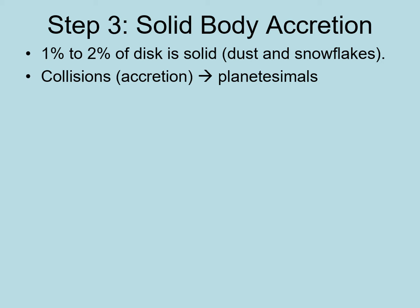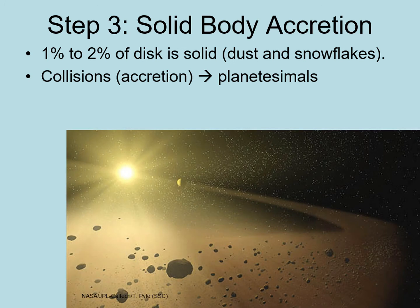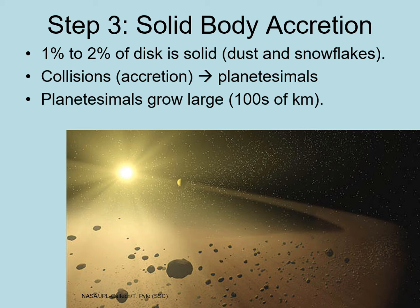Similarly, the dust grains and ice particles in the disk clump together to form ever larger bodies. When they get bigger than a kilometer across, we start calling them planetesimals. When they're this size, their own gravity starts becoming important enough that it begins to affect the paths of smaller objects around them, focusing more debris to help them grow faster.